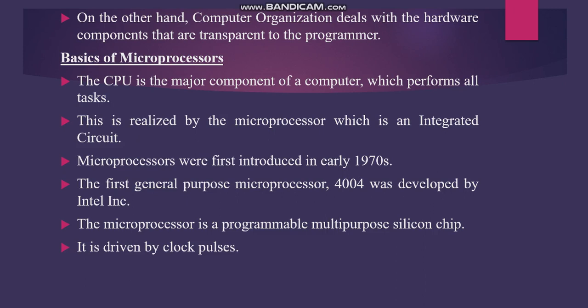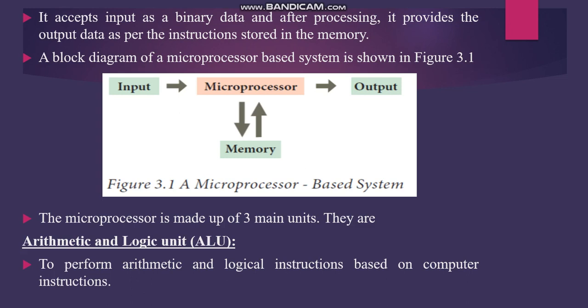The first processor was the Intel 4004. A microprocessor is a programmable, multipurpose silicon chip. It is driven by clock pulses — that is, by using a clock.